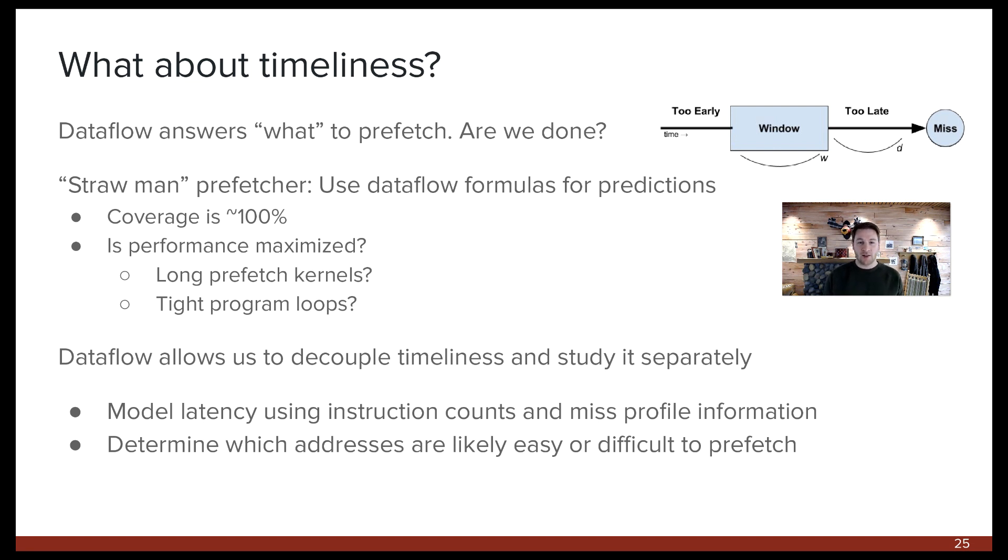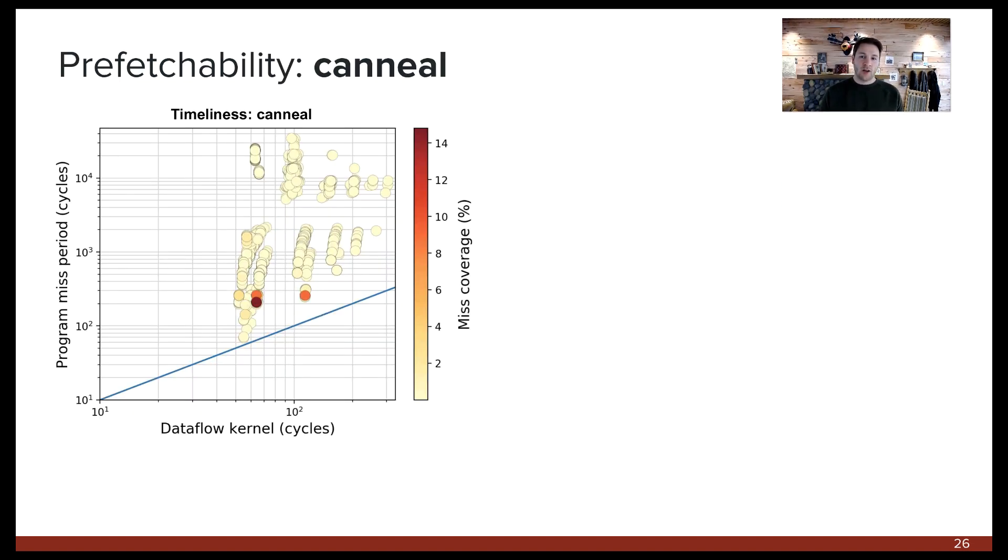Well, a second capability of Dataflow-based analysis is that it allows us to study timeliness independently from accuracy. We can do this by leveraging our information about program and Dataflow kernel sizes to model how quickly we can run ahead with these direct calculations. Let's take a look at two examples. Here we're looking at a timing plot for CNIL. The purpose of this plot is to show how likely a program is to be able to prefetch in time. The x-axis is the latency of the reduced Dataflow kernels which can be used for address calculations. The y-axis is the latency of the original program between occurrences of the same miss instruction. Each point is a Dataflow kernel colored by its relative importance. The blue line is a slope of 1, which is the slowest that any prefetch kernel can be relative to the machine. In other words, any points along the blue line represent addresses that cannot be computed faster than the program consumes them. An example of this would be a pure pointer chase.